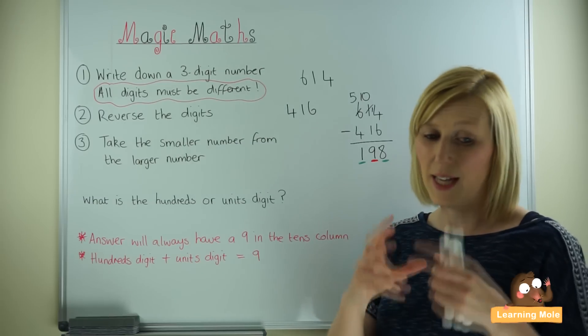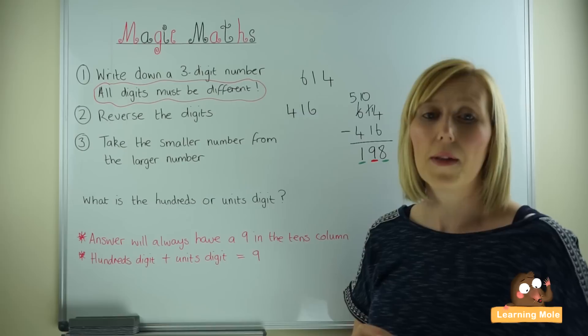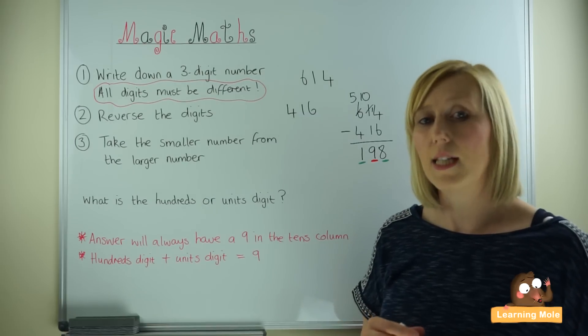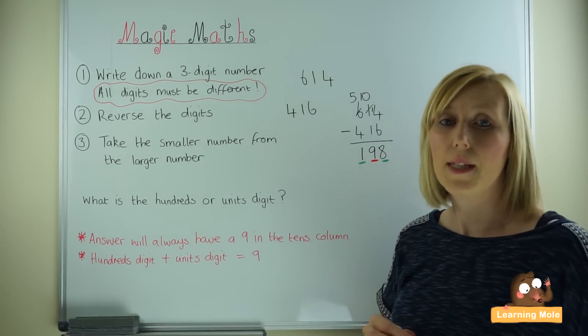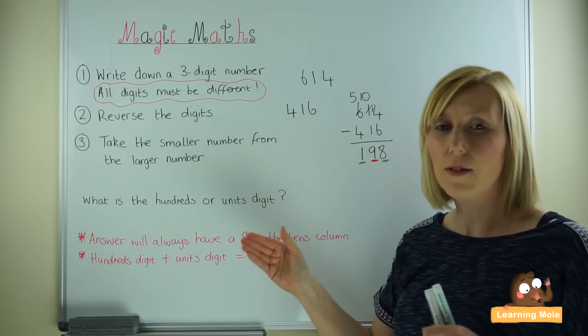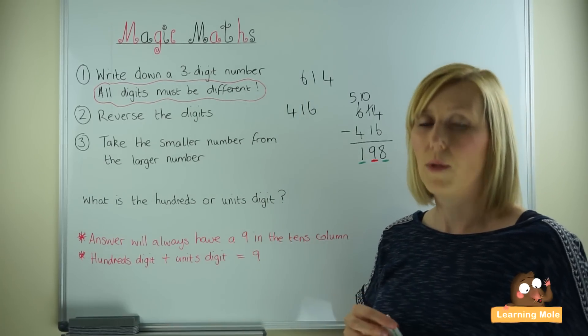The person who has their answer in secrecy will tell me that their units digit is 8. And then I will be able to calculate 8 plus what makes 9, which is 1.